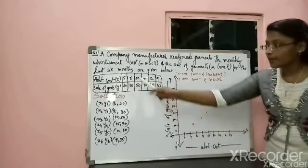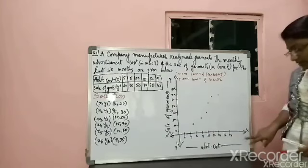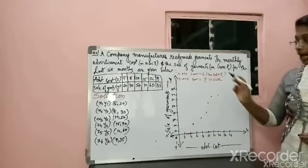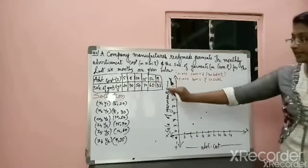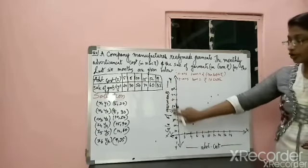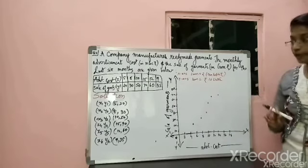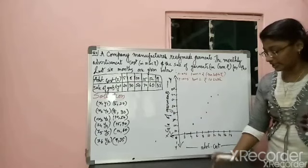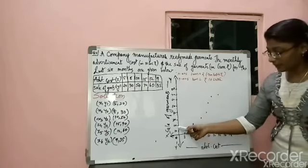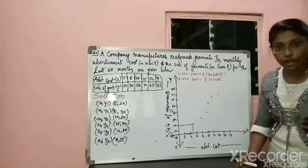Take the first variable: 5 and 20. On the X-axis plot the advertisement cost and on the Y-axis plot the sale of garments. Mark values like 10, 20, 30, 40, 50, 60, 70, 80 on the Y-axis. For X1, Y1 — that is 5 and 20 — on the X-axis find 5 between 4 and 6, and on the Y-axis take 20, then mark the intersection point.